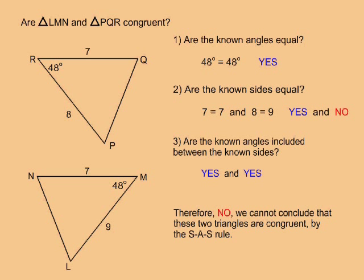Question 3: are the known angles included between the known sides? In both cases, yes, the 48 degree angle is located between the two known sides. But because the known sides are not equal, no, we cannot conclude that these two triangles are congruent by the SAS rule.